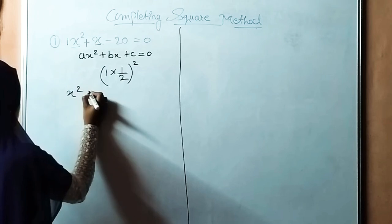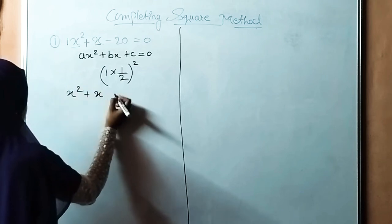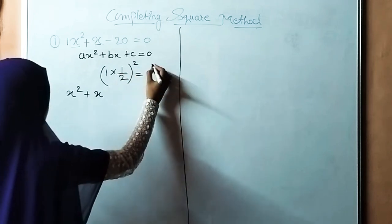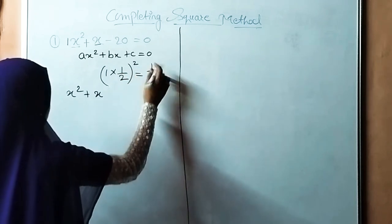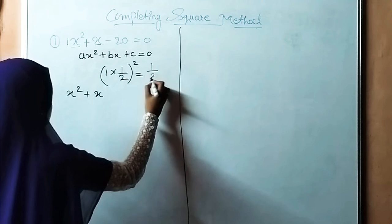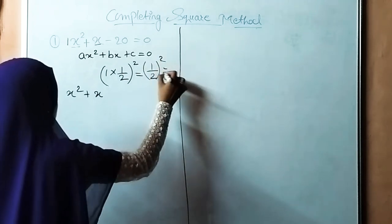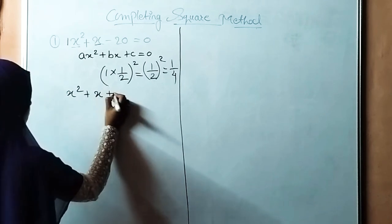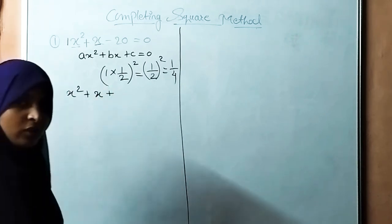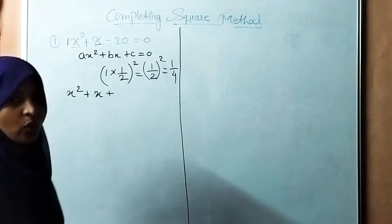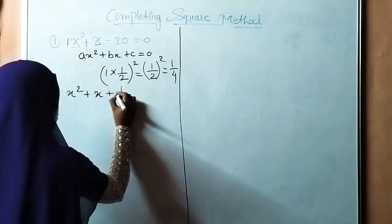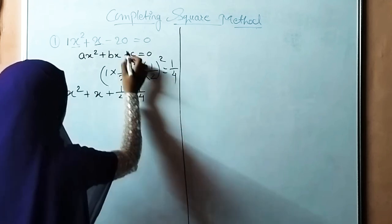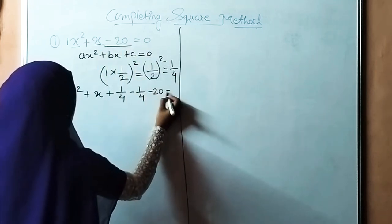So we have x square plus x. If we take the coefficient of x, which is 1, and multiply by 1/2, then 1/2 bracket square equals 1/4. So we are going to add 1/4 and subtract 1/4. We write: x square plus x plus 1/4 minus 1/4 minus 20 is equals to 0.